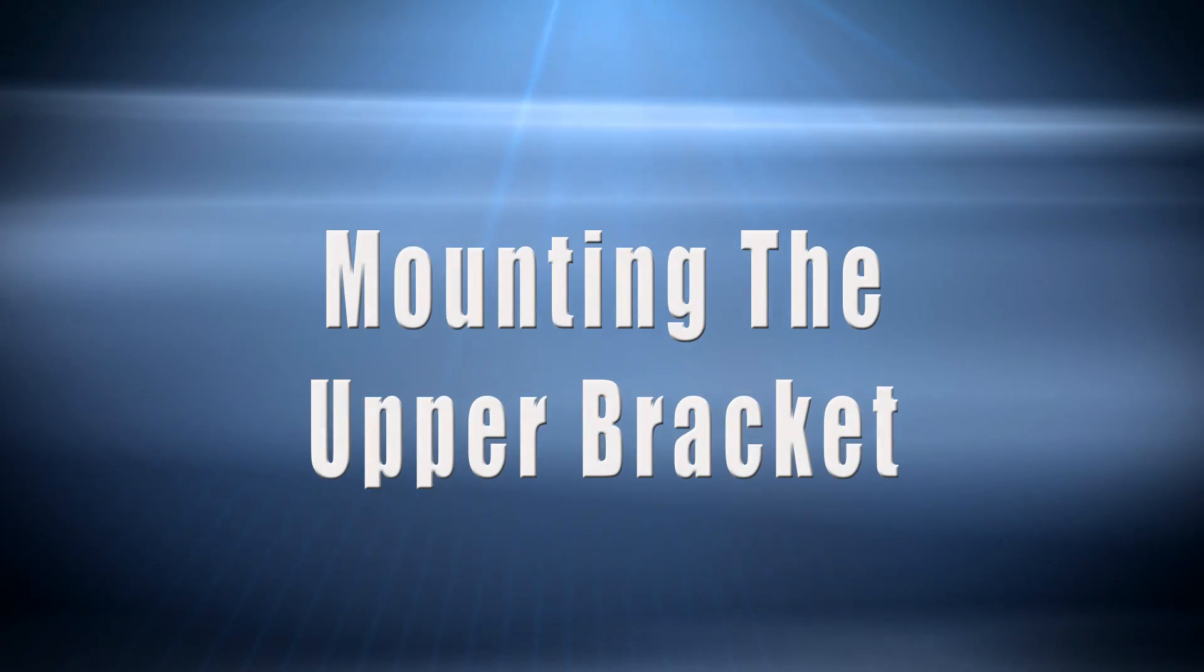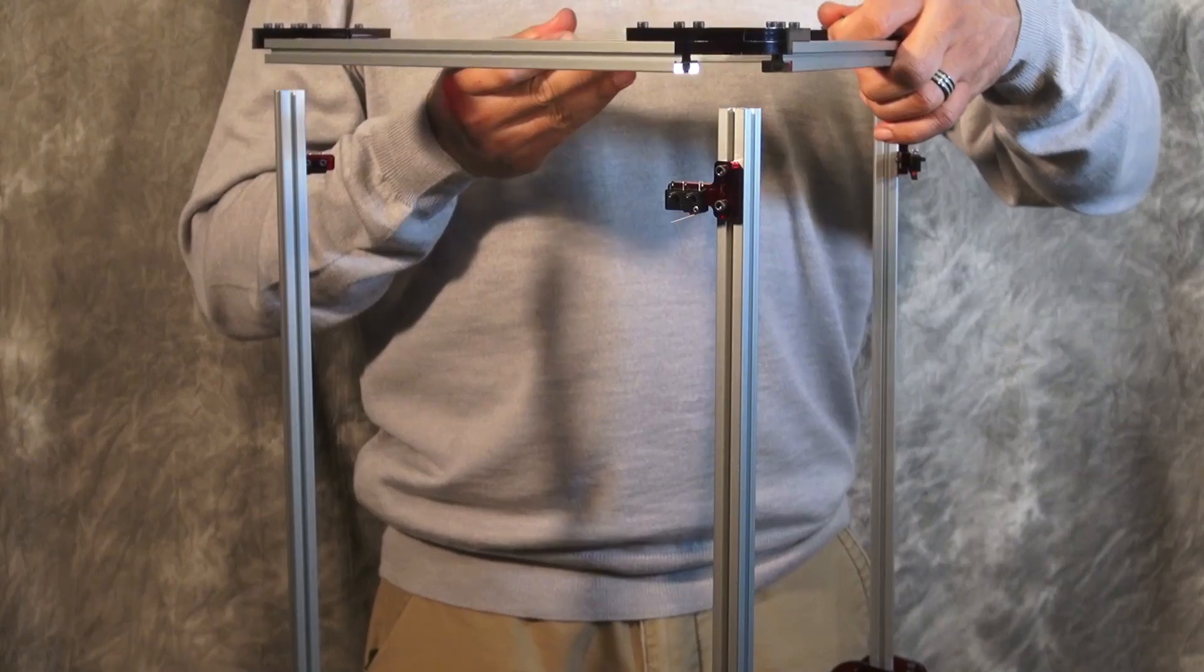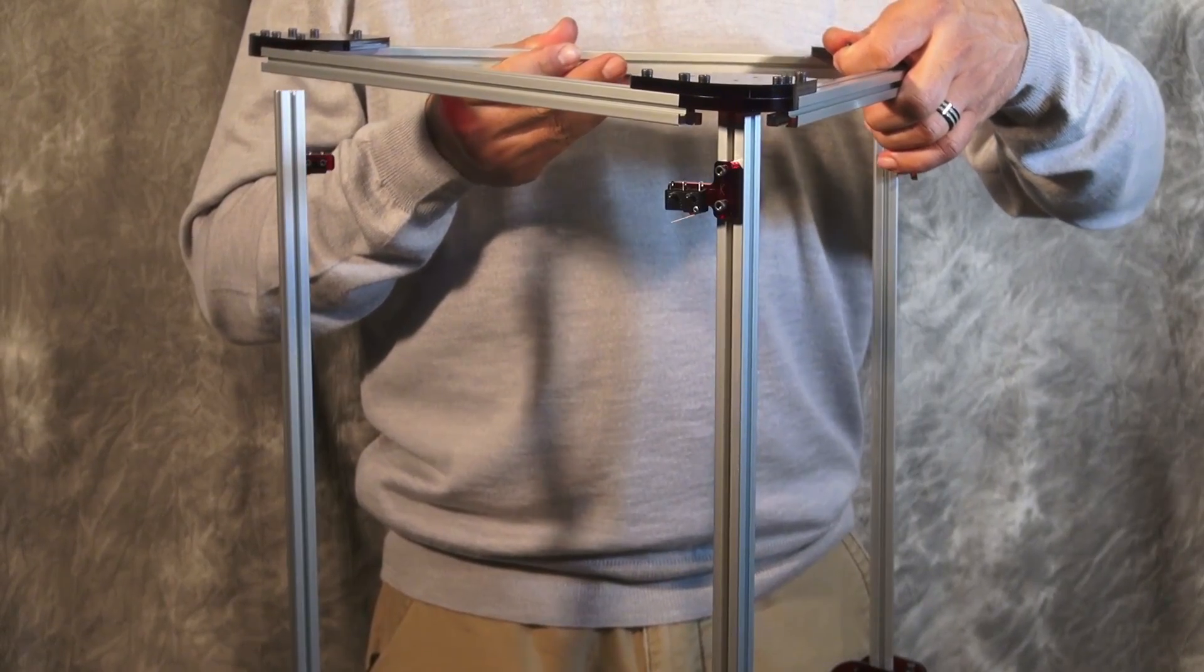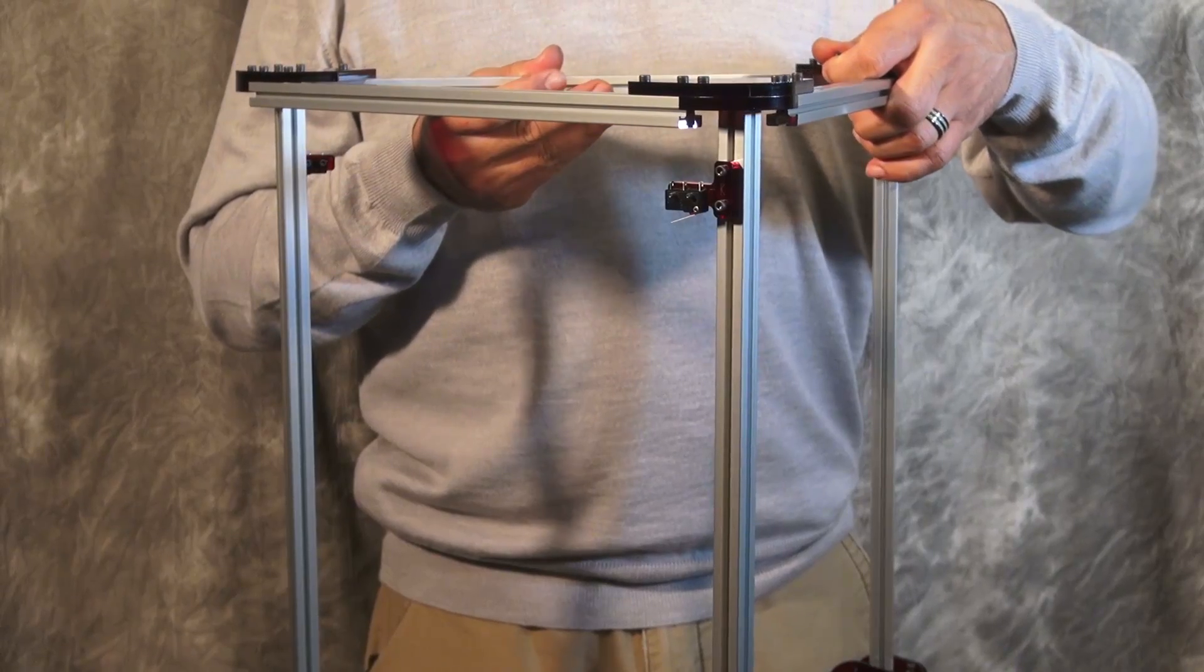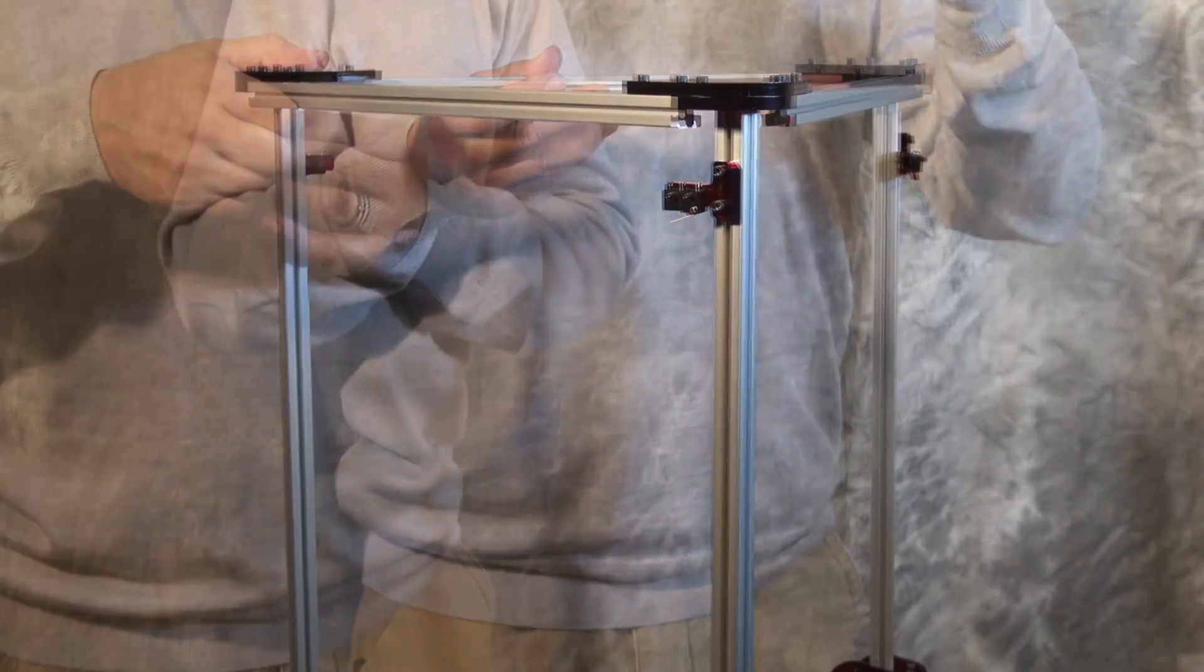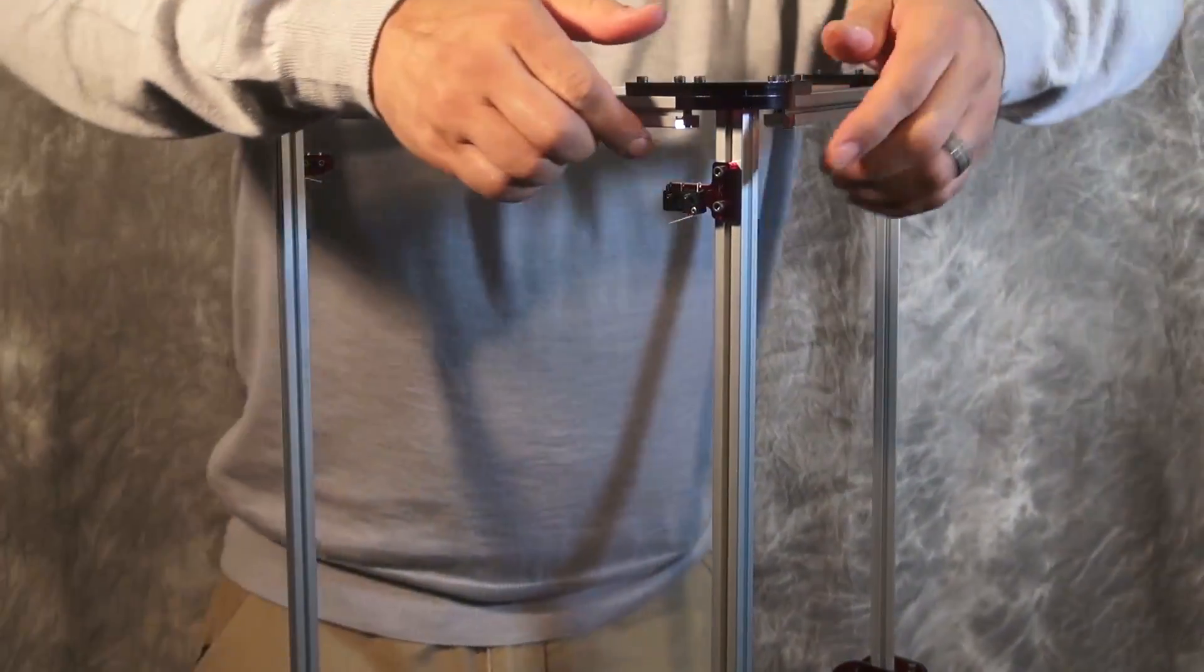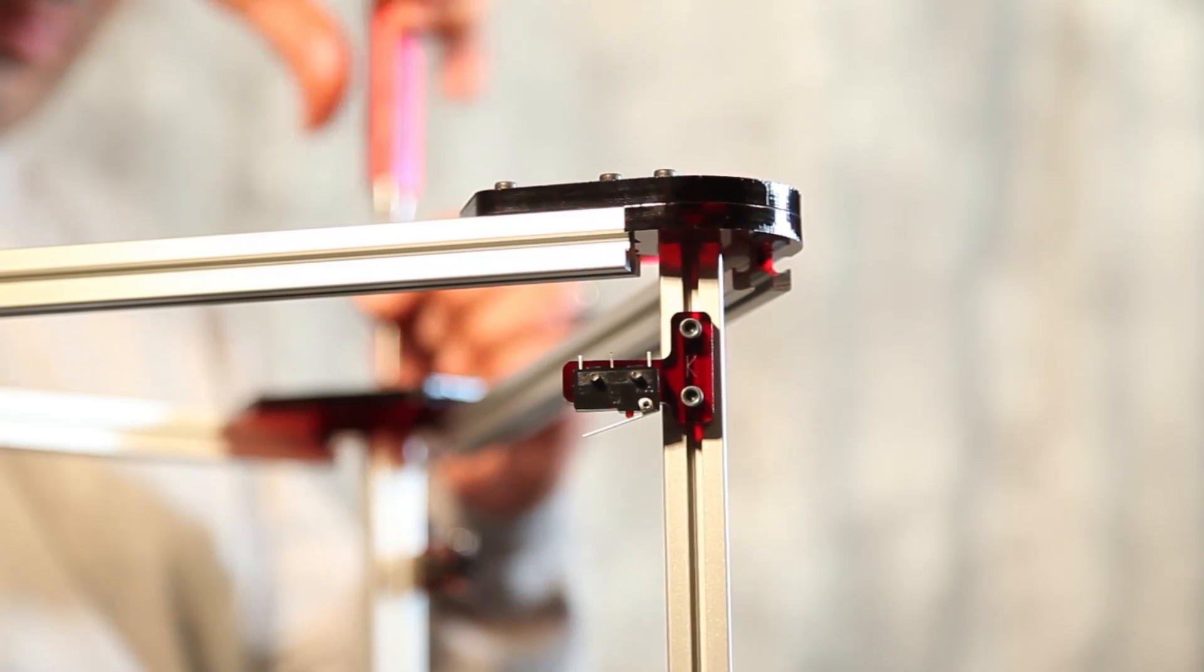Now we're ready to install the top bracket onto the top of the printer. For this step, you're going to need three M3 by 16 millimeter bolts. You're going to want to align each end into the wire hole that's in each corner.